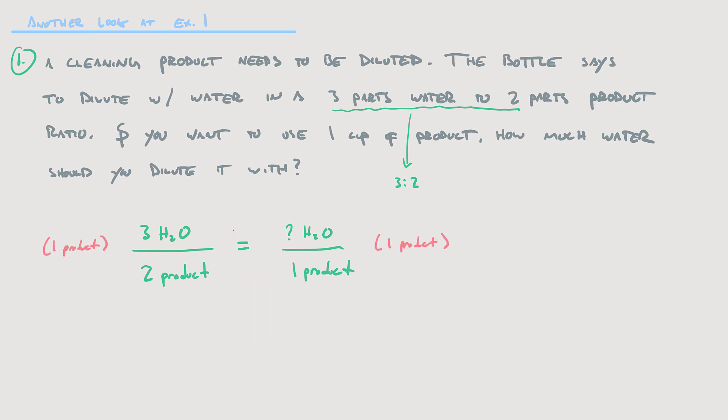Now I solve for the unknown. Multiplying both sides by 1 product cancels the denominator on the right and the product unit on the left, leaving 1 times 3 over 2, which is 1.5. So I need 1.5 cups of water. Setting up a proportion equation is more versatile than just interpreting the ratio decimal and multiplying — it gives you a clear, step-by-step equation to solve.